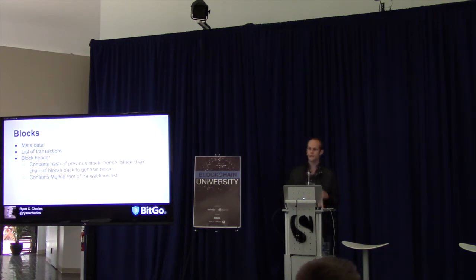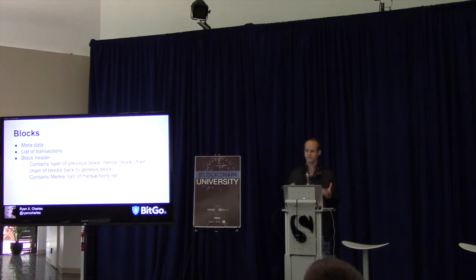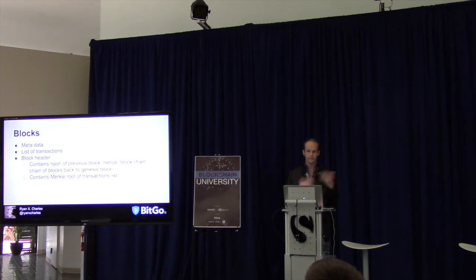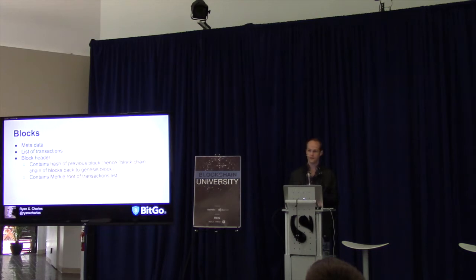We've basically covered transactions. For the rest of the talk, I'll cover blocks, then give code examples. Blocks are a list of transactions — that's the basic notion. A block has some metadata like the timestamp, a list of transactions, and a block header. The block header contains the hash of the previous block — that's why it's called a chain, because you can follow the hashes back to the genesis block. It also contains a Merkle root of the transaction list.